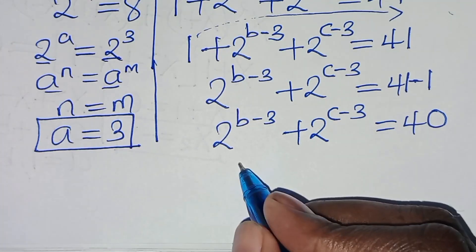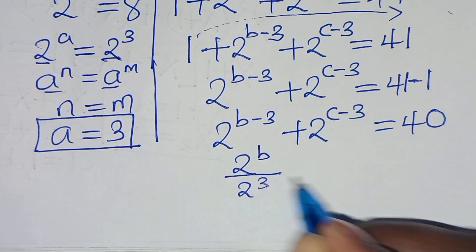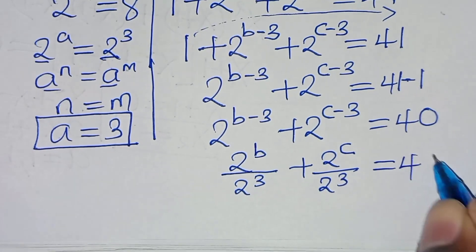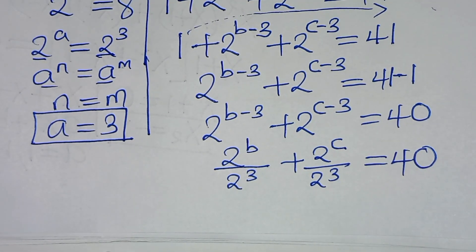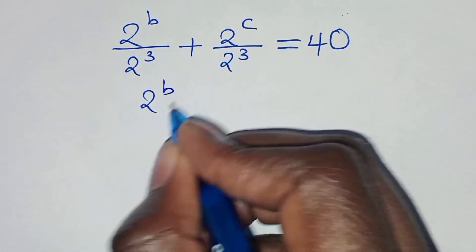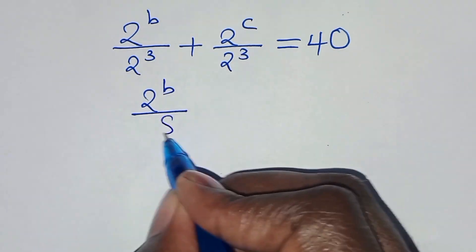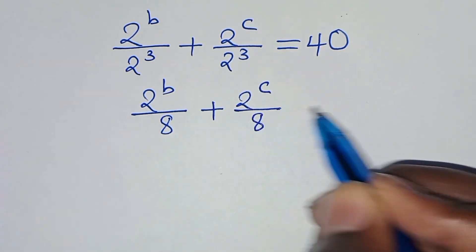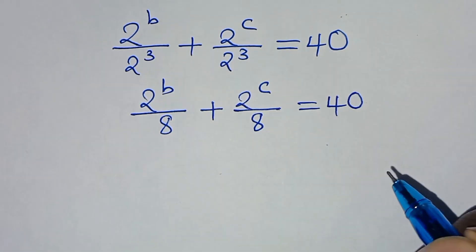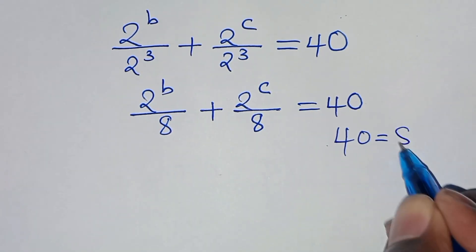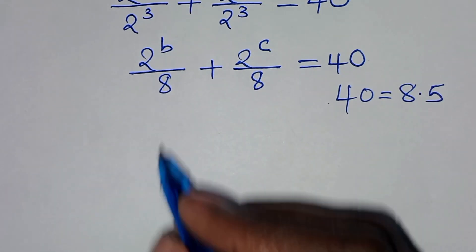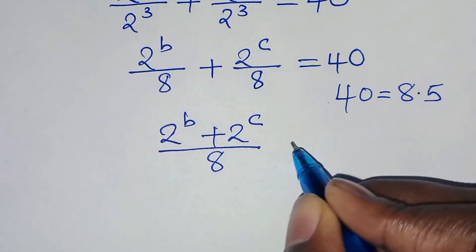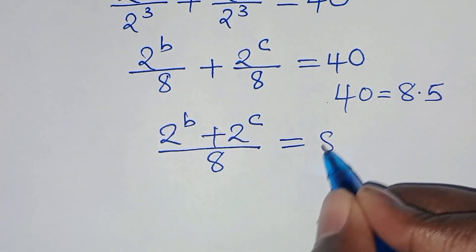This is the same as 2^b / 2^3 + 2^c / 2^3 = 40, which simplifies to 2^b / 8 + 2^c / 8 = 40. We can express 40 as 8 × 5, giving (2^b + 2^c) / 8 = 8 × 5.